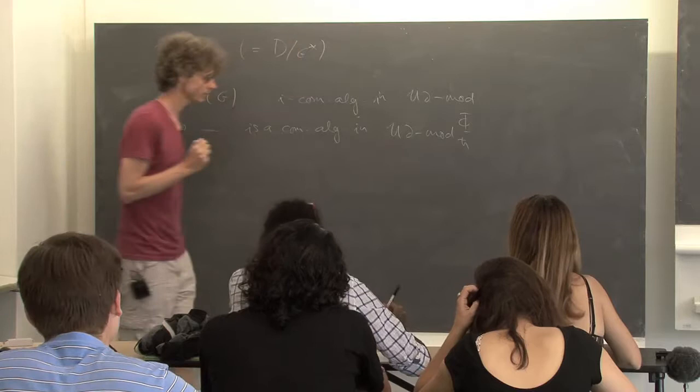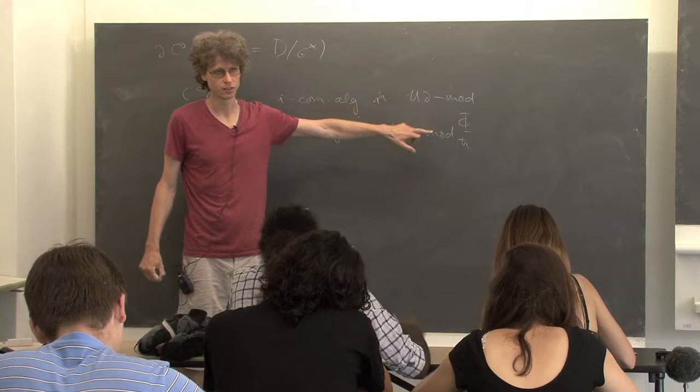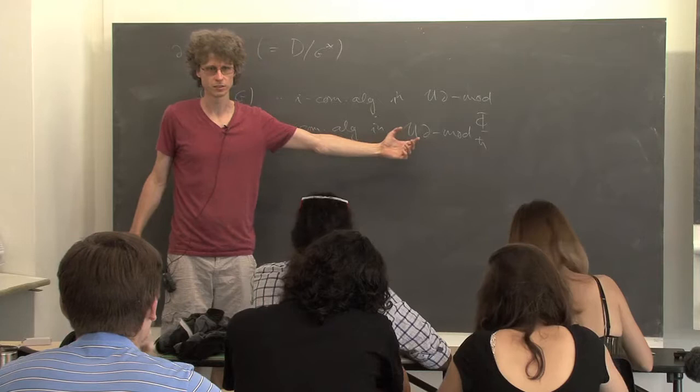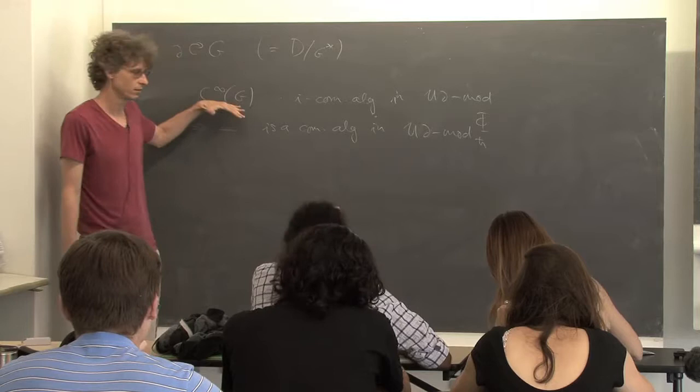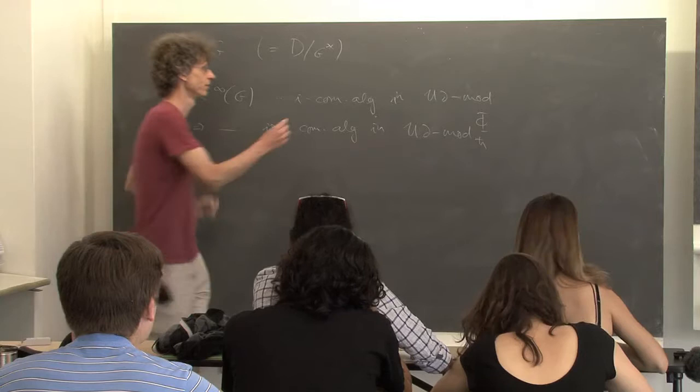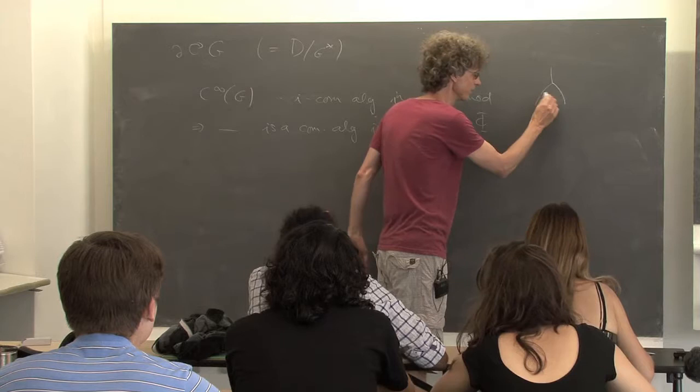It's the same category as that one — it even has the same tensor product — the only difference is a new braiding in place of the symmetry, and associativity re-bracketing is now something difficult coming from the associator. But otherwise the same thing. The statement is that this guy with the same product and the same unit stays a commutative algebra here because it is I-commutative.